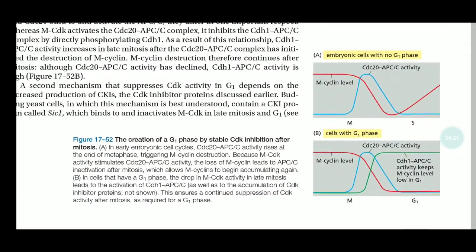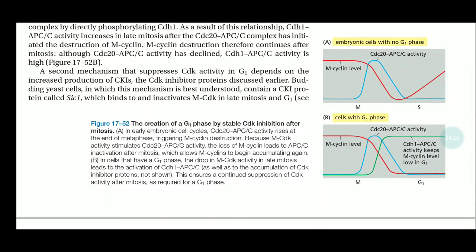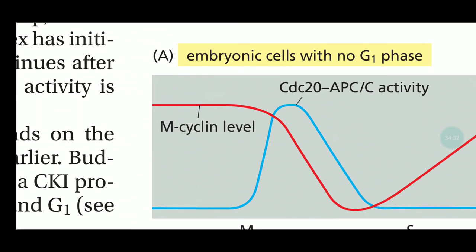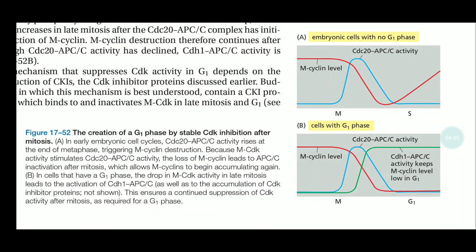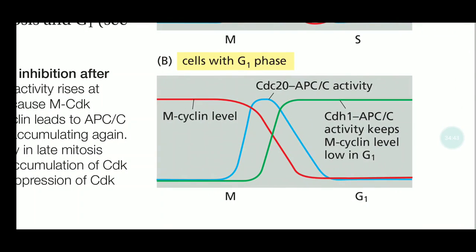This graph shows the concentration of key regulators over the cell cycle. CDC20, when bound to APC/C, causes inactivation of M-cyclin. CDH1 is activated after CDC20 and keeps M-cyclin levels low in G1. Both CDC20 and CDH1 are homologous co-activators of the APC/C complex.